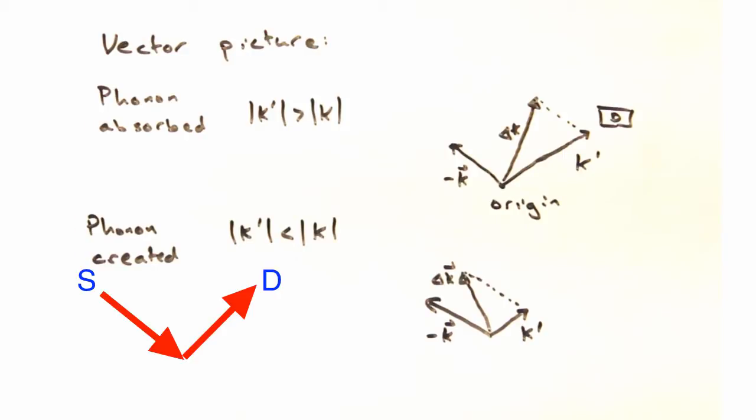So if you had a given source and a detector position, like here, you can see that depending on whether or not you're creating or absorbing phonons, you could potentially be sampling two different points in reciprocal space, and that's just for a single type of phonon being created or destroyed.